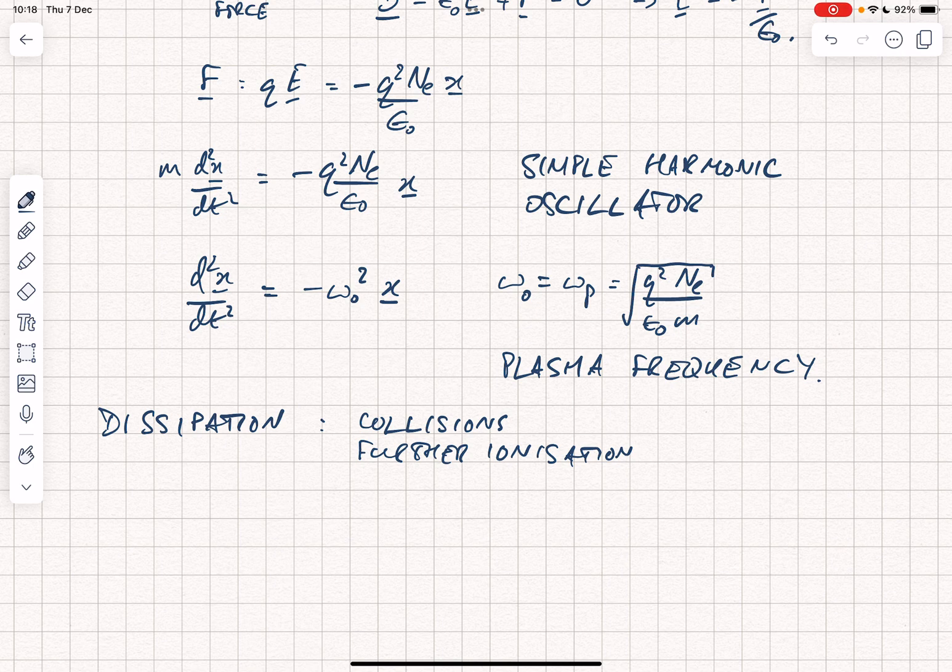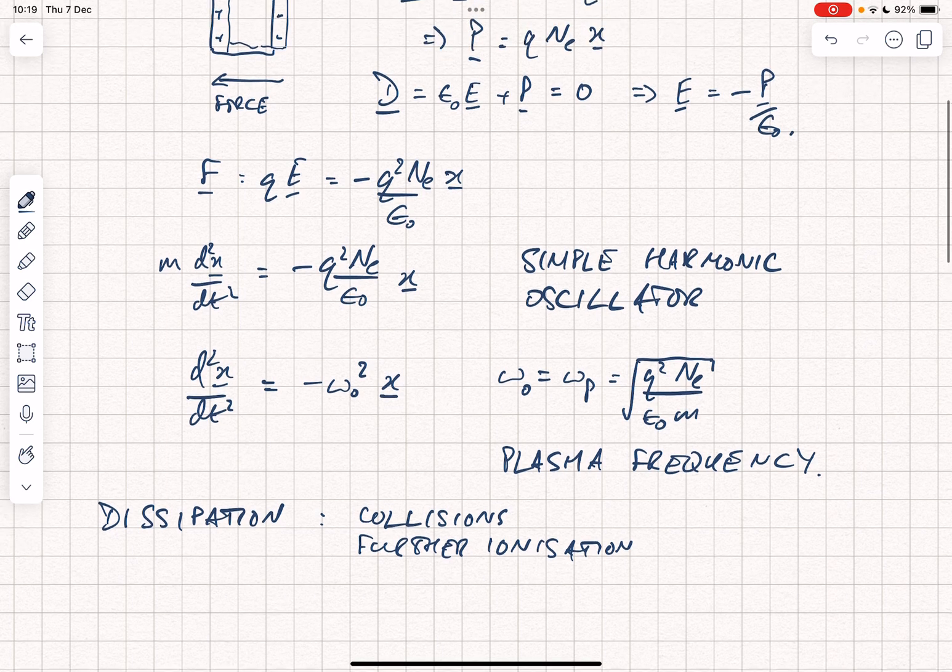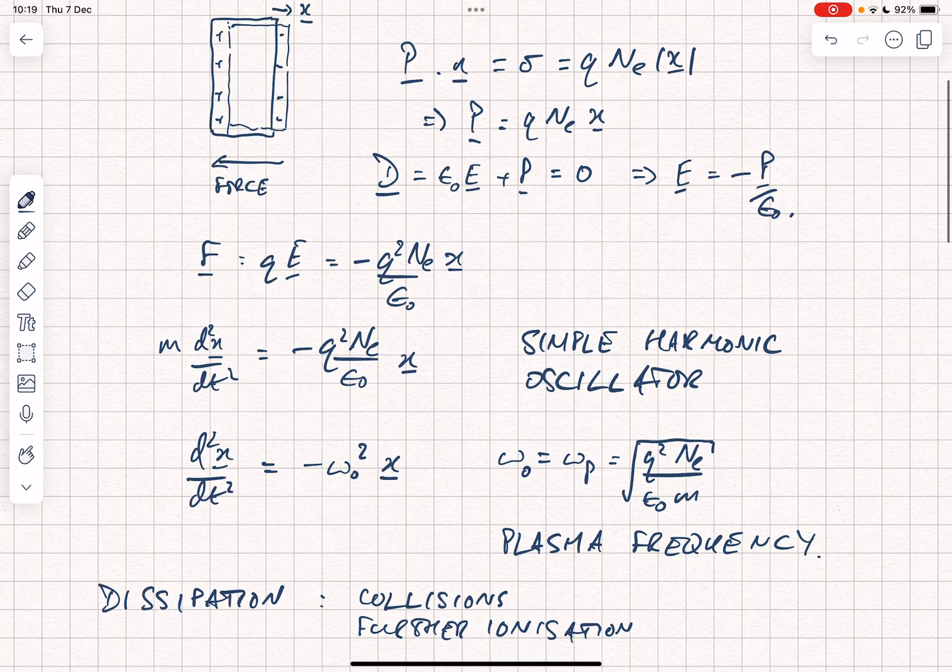In the next video, we will consider what happens in terms of dispersion, the response of a plasma to electromagnetic waves of specific frequencies and how the frequency relates to the wave number. That's a slightly different problem and it opens up all sorts of interesting problems. But this has been just a simple demonstration of why plasmas tend to respond with an oscillation to perturbation.